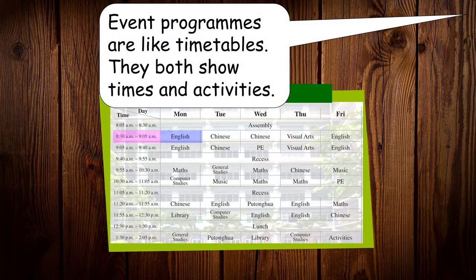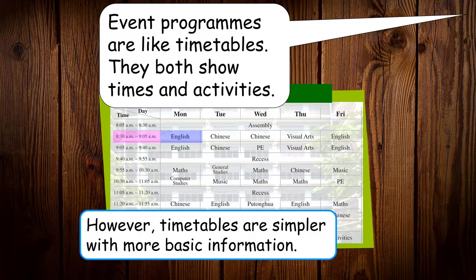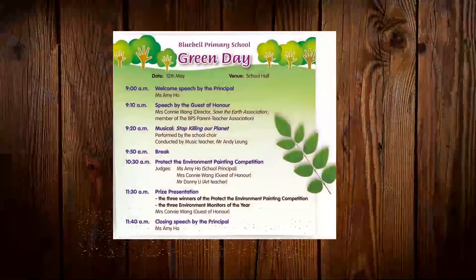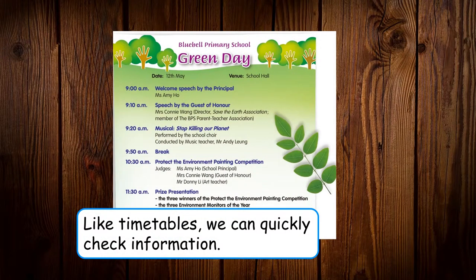We have a timetable at school — 6A has a timetable, 6B has a timetable, and so on. Event programs are like timetables; they both show times and activities. However, timetables are simpler with more basic information. For example, on a school timetable you might see 8:30am to 9:05am is English lesson — we just say English. In event programs, like timetables, we can quickly check information.